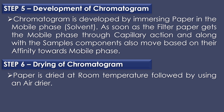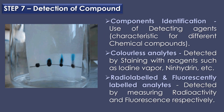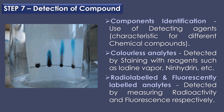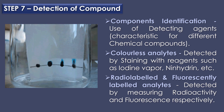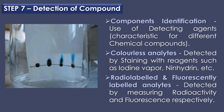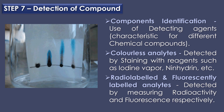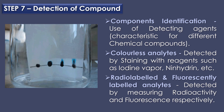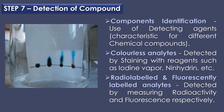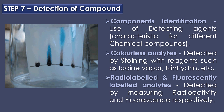The sixth step is drying of chromatogram. After development, the paper is dried at room temperature followed by using an air dryer. The seventh and final step is detection of compound. The components are identified using detecting agents characteristic for different chemical compounds. Colorless analytes are detected by staining with reagents such as iodine vapor, ninhydrin, etc. Radio-labeled and fluorescent-labeled analytes are detected by measuring radioactivity and fluorescence respectively.